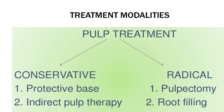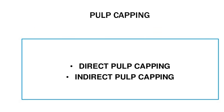Introduction. Treatment modalities. Pulp treatment: Conservative versus radical. 1. Protective base. 2. Indirect pulp therapy. 3. Direct pulp therapy. 4. Pulpotomy. Radical: 1. Pulpectomy. 2. Root filling. Pulp capping includes direct pulp capping and indirect pulp capping.